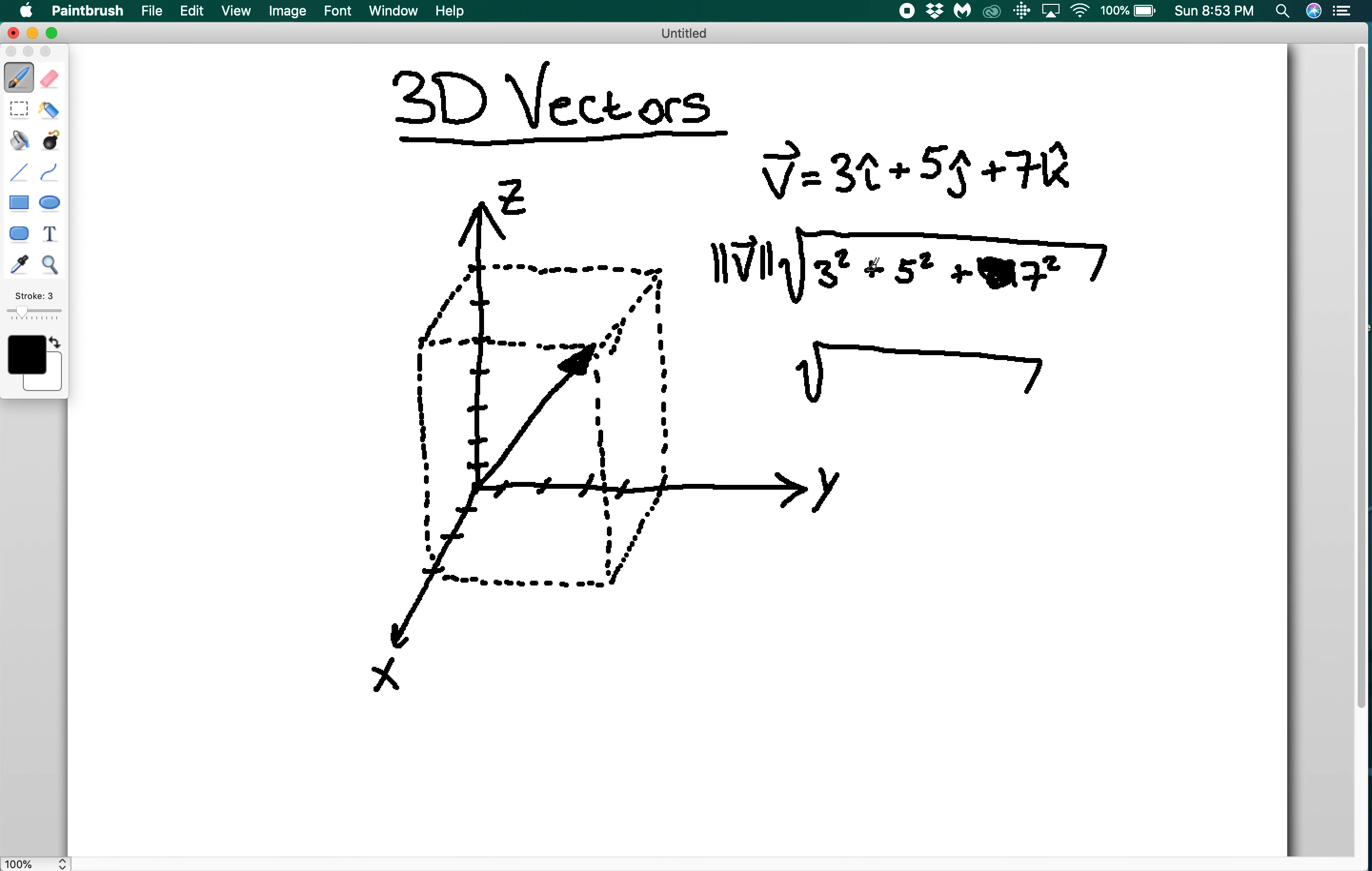And then we take that square root there. You should get, so you're going to have 9 + 25 + 49. And this should be equal to around 9.11. Okay? So that would be the length of this vector here.